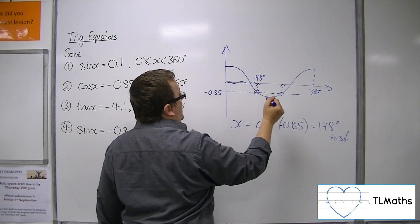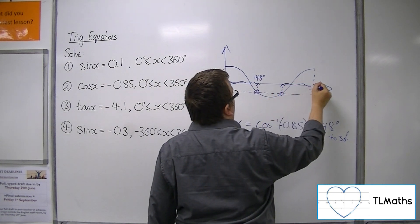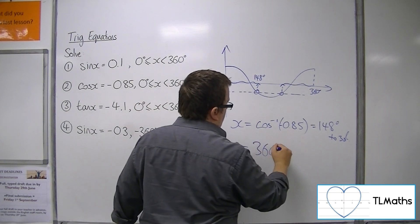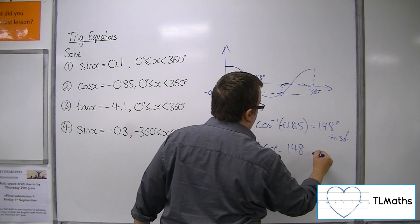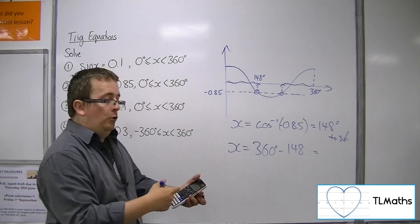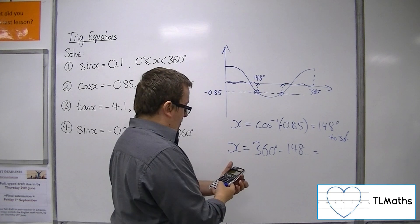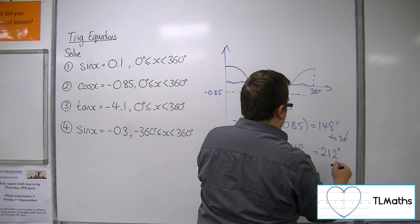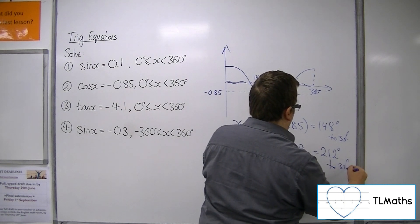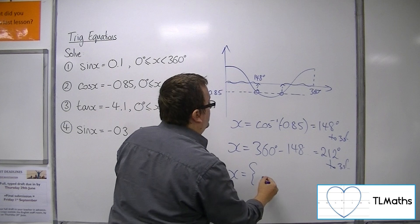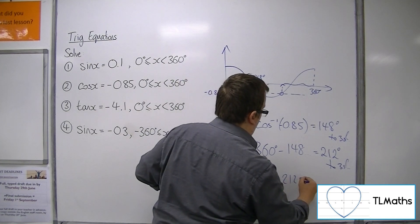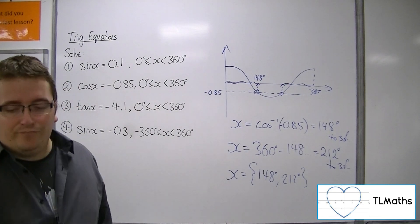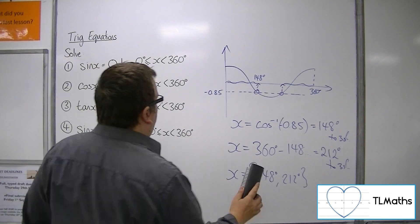So that is that solution there. Now that is 148 degrees, so this must be 148 degrees away from the 360. So 360 take away the 148. Use the full calculator display that you've still got in your calculator. 360 take away the answer key is 212 degrees to 3 sig fig. So x has two solutions between 0 and 360.